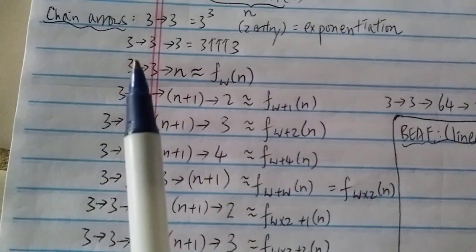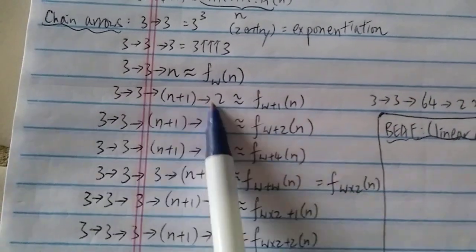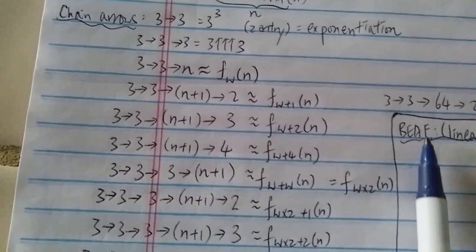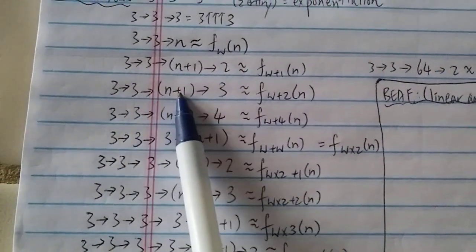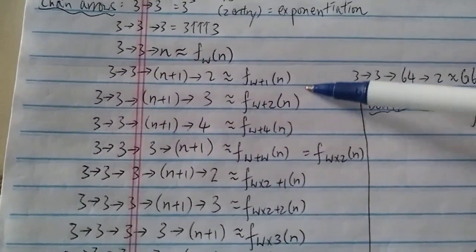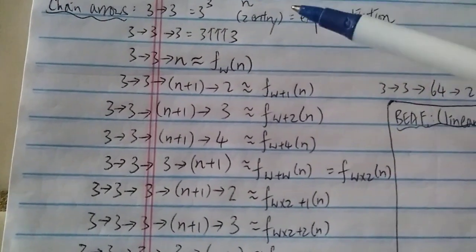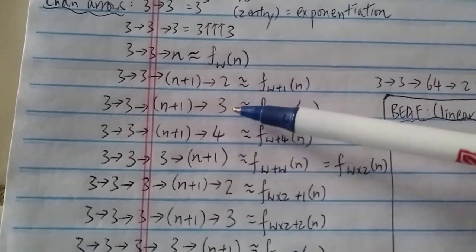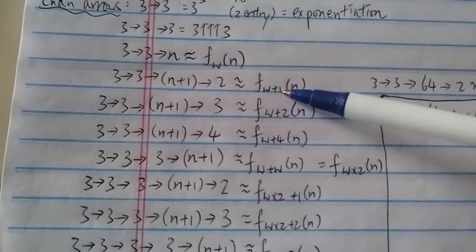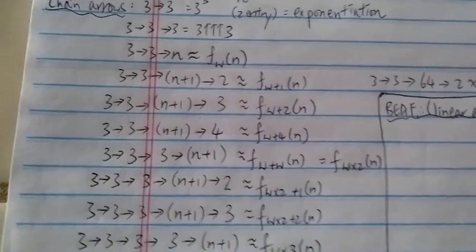For 4 entries, 3→3→(n+1)→2 has growth rate around f(ω+1,n) already. The next one, 3→3→(n+1)→3, has growth rate f(ω+2,n). So going up the chain arrow ladder is a lot simpler because the growth rate is much faster - you just change the last entry, adding 1 to the last entry to already get up to ω+1, ω+2 - actually this is ω+3, there's a typo.